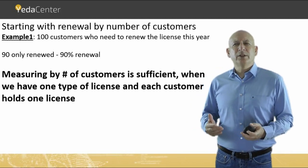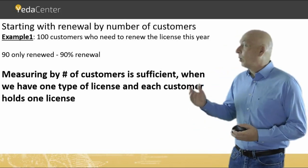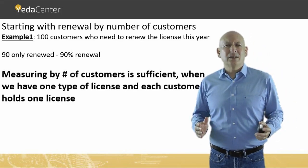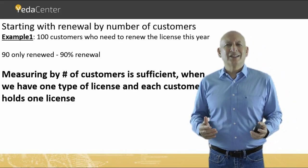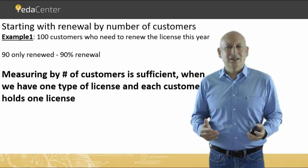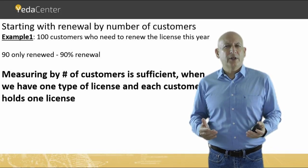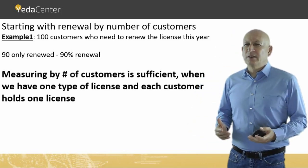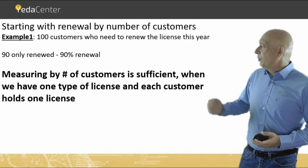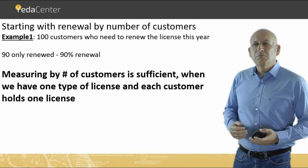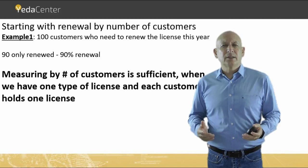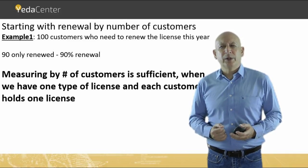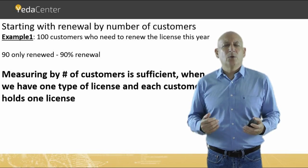So, if we return to the previous example where we have 100 customers, all having the same license and each customer holds a single license, then we have 100 customers, 100 licenses, and if 90 licenses are renewed, then we have 90% renewal of licenses — the same as the renewal rate for customers.